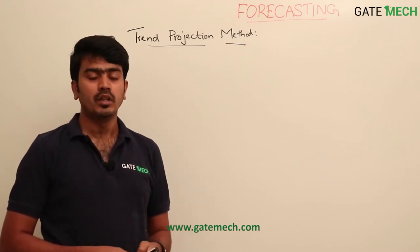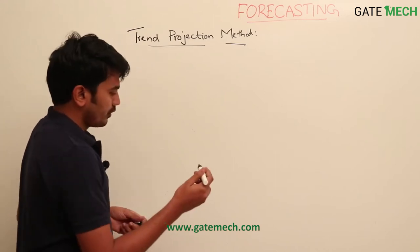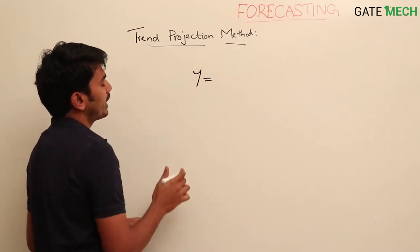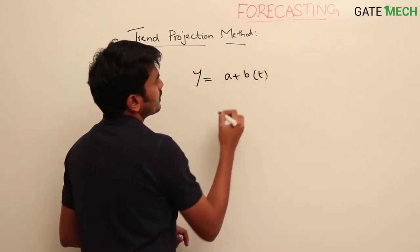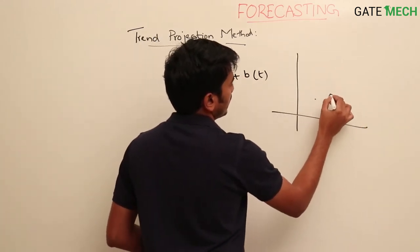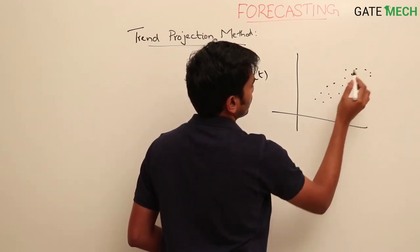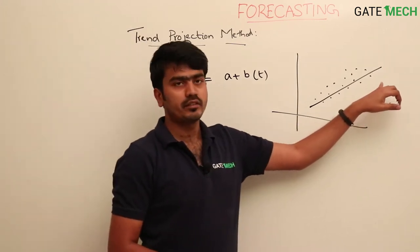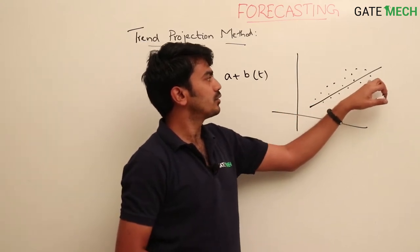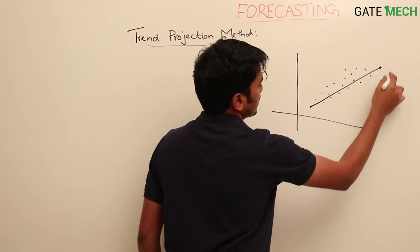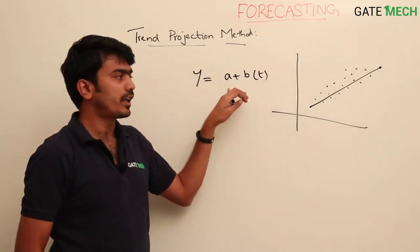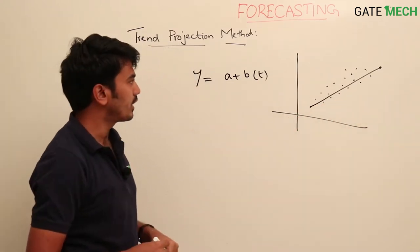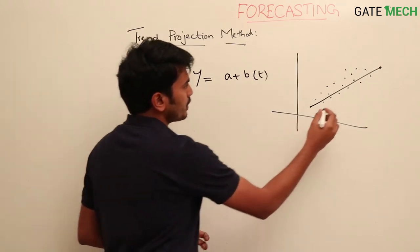We use the trend projection method or least square method to capture the trend in the data. We use an expression similar to linear regression, basically trying to fit a line to the data based on the time period. If you plot the data on a graph it shows an upward trend, and we fit a linear equation to find the sales for the next period. This is called a trend line.